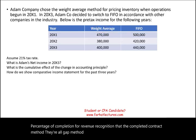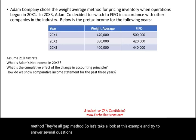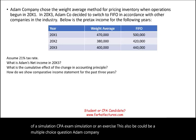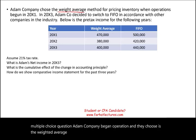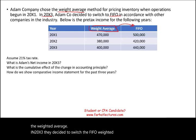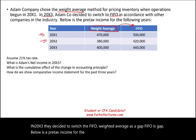Let's take a look at this example and answer several questions, presented as a CPA exam simulation or exercise — it could also be a multiple choice question. Adam Company began operations and chose the weighted average method for pricing inventory. In 20x3, they decided to switch to FIFO. Both weighted average and FIFO are GAAP methods. Below is the pre-tax income for years X1, X2, and X3.